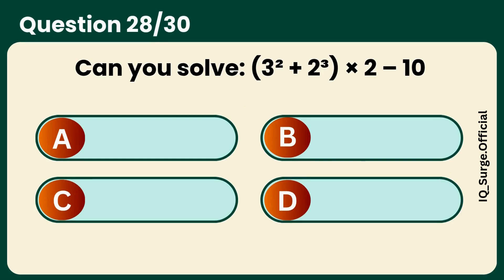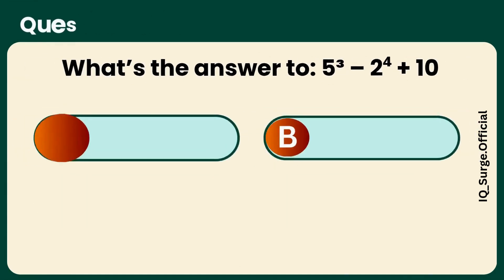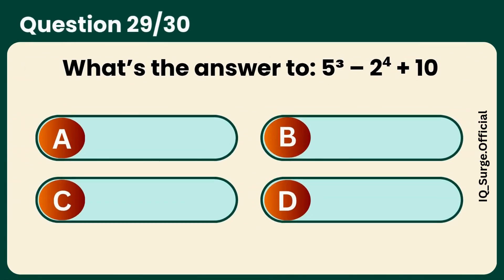What's the answer to 5 cubed minus 2 to the power of 4 plus 10? Answer D, 91.